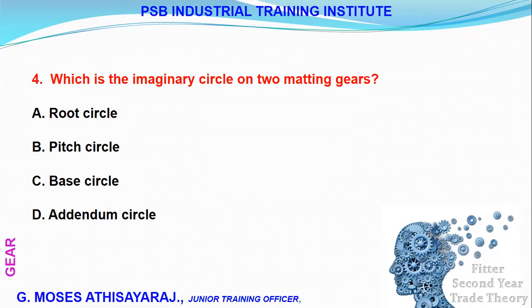Question four: which is the imaginary circle on two mating gears? The pitch circle is the imaginary circle on two mating gears. The pitch circle is the answer.